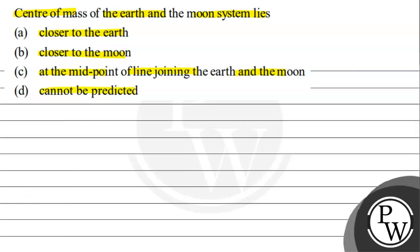So, this concept is a two-body system where m1 is greater than m2. The center of mass of the earth and moon system lies near the heavier mass. This concept: center of mass lies near the higher mass.